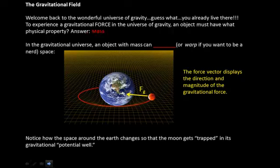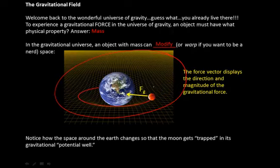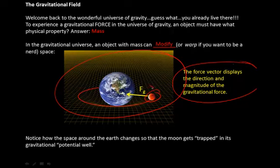That's mass. In this gravitational universe, an object with mass can modify or warp space. Notice in this picture that the space around the Earth is being warped just because the Earth is very massive. The Earth's large mass warps the space around it, so the moon gets trapped in what we call its gravitational well. The force vector displays the direction and magnitude of the gravitational force — always inward towards the center. The moon gets trapped in this gravitational potential well.